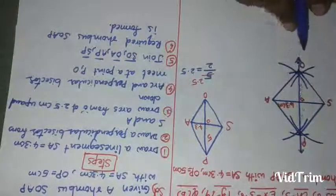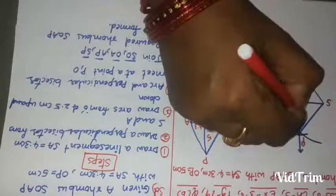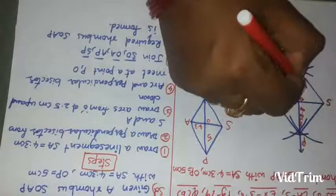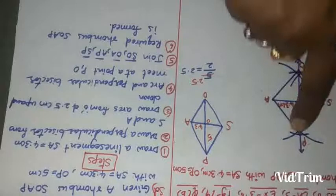The required rhombus is done here. It is 2.5 centimeters and 2.5 centimeters. Our required rhombus SOAP is done.